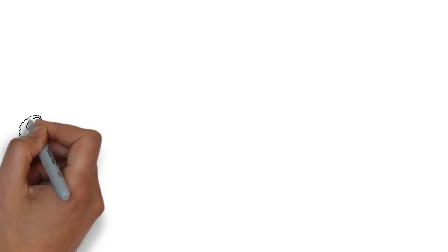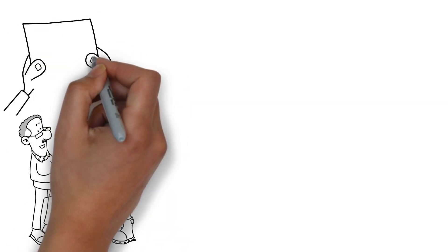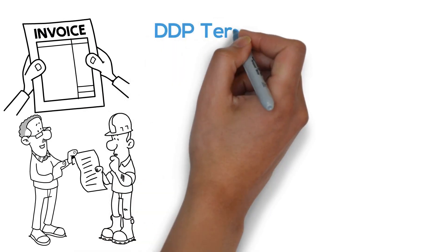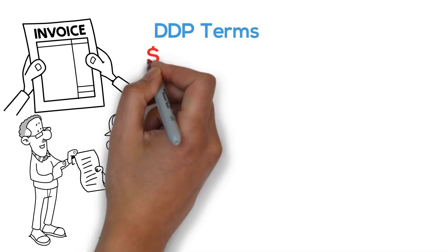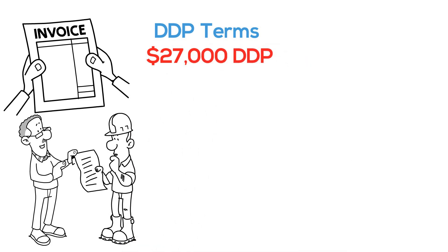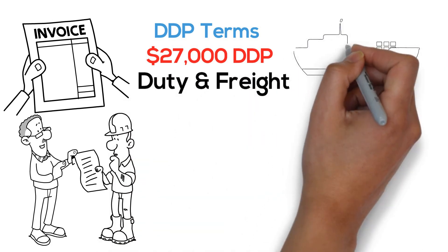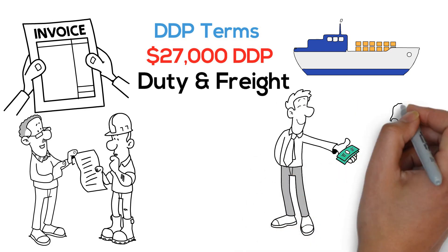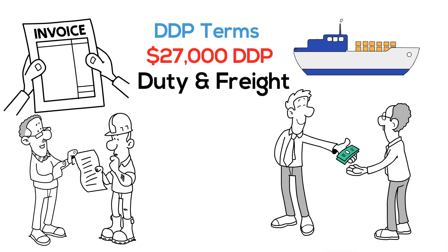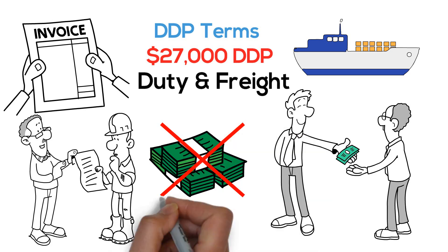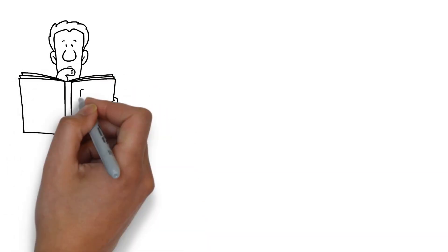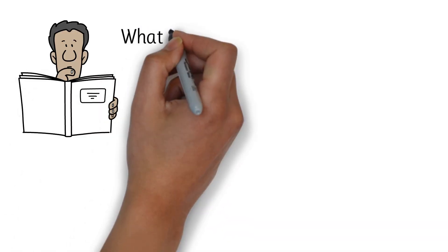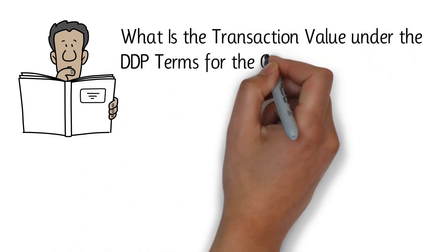Now when the broker gets a copy of the commercial invoice, remember John added all those charges into his invoice under DDP terms. So the broker receives an invoice showing $27,000 DDP. The broker knows that the $27,000 includes duty, freight, and all those charges that aren't dutiable. If he doesn't deduct them, John — as the importer of record under DDP terms — will be paying duty on charges that don't need to be in there. This is the part that typically comes up on the exam, where you're asked to determine what the transaction value is under DDP terms.